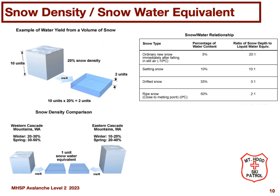Snow water equivalent, or SWE, is a measure of the water content of the snowpack — the equivalent amount of liquid water from a given volume of snow. For example, for snow that has a density of 20% water content, 10 units of snow would yield 2 units of liquid water equivalent. If the snow density were 10%, the same amount of snow would yield 1 unit of liquid water when melted. The snow on the western Cascades has 1.5 to 2 times the water content of snow on the eastern Cascades.